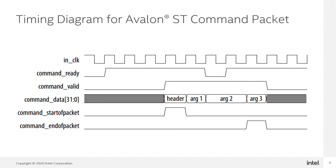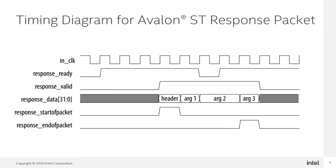This is the timing diagram to send a command packet using Nearbox Avalon SD IP. When command ready asserts, we can assert both command value and command start of packet, and then send the command packet using the command data interface. Command start of packet can be deasserted and command valid needs to be asserted until the end of the command packet. When we have finished sending the command packet using command data, we can assert command end of packet to indicate that the command packet ends at that particular cycle.